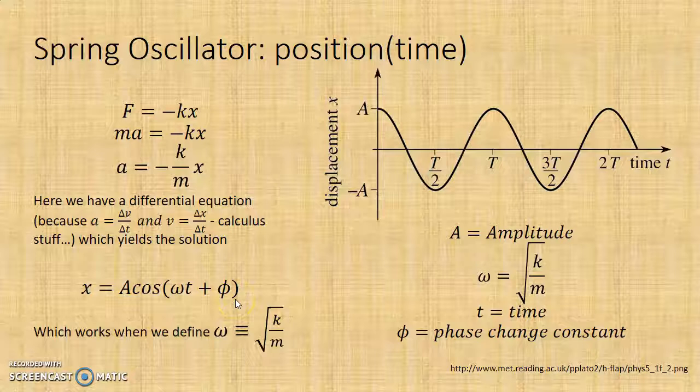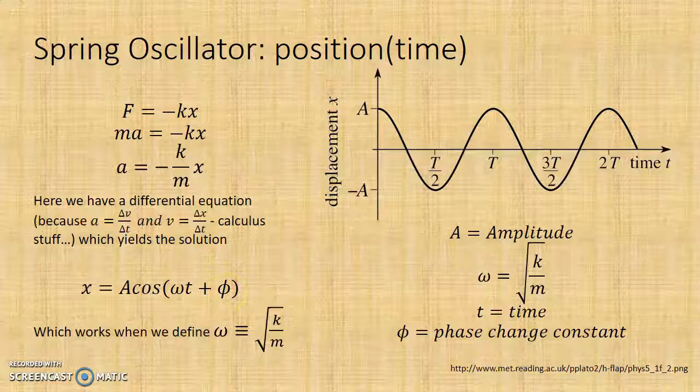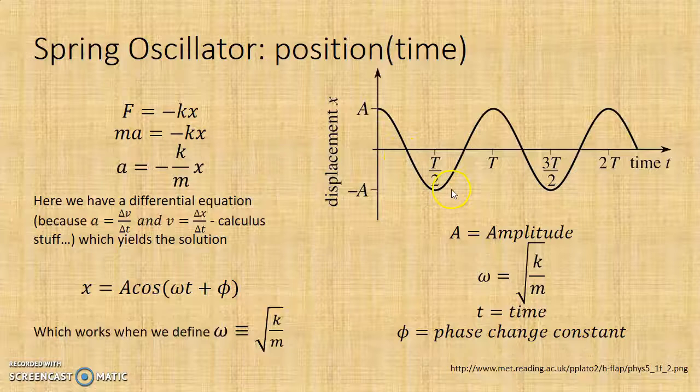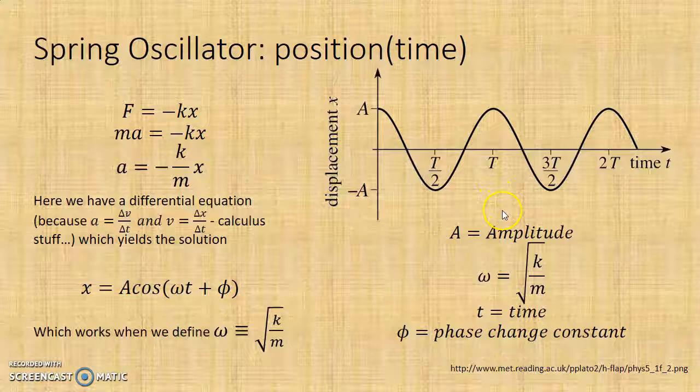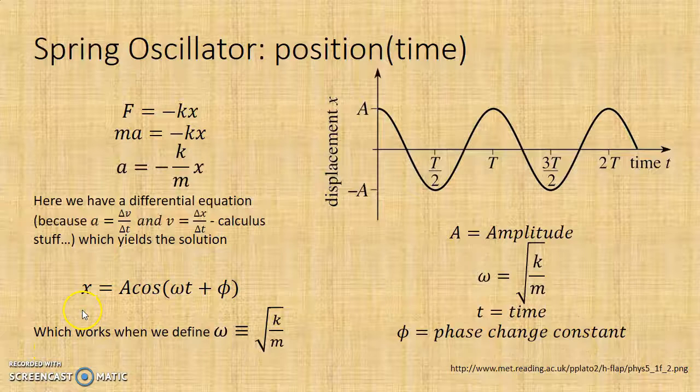So t is just time, and phi is phase change constant. It's a constant. It doesn't really matter. All it would do is when we look at this nice cosine curve, if we threw in, for example, a phase change constant of pi, then instead of starting here and going down, it would start at where pi is, which is actually the T over 2 here, and would go down like that. But that's nothing to worry about. The other thing is, this equation is not actually on your AP equation sheet. They have a simpler version, which I'm going to talk to you about in a minute.